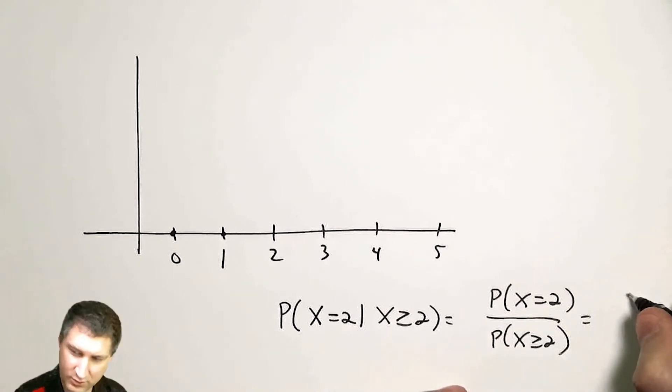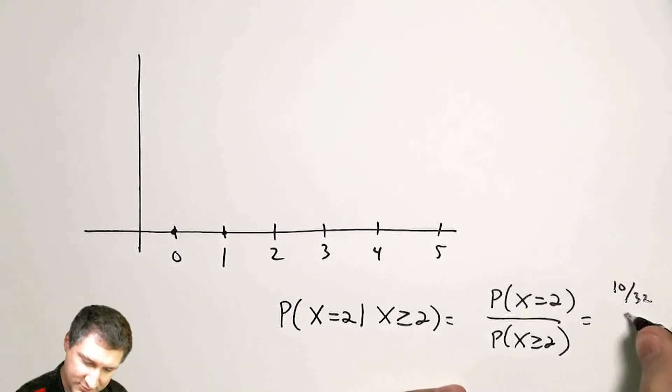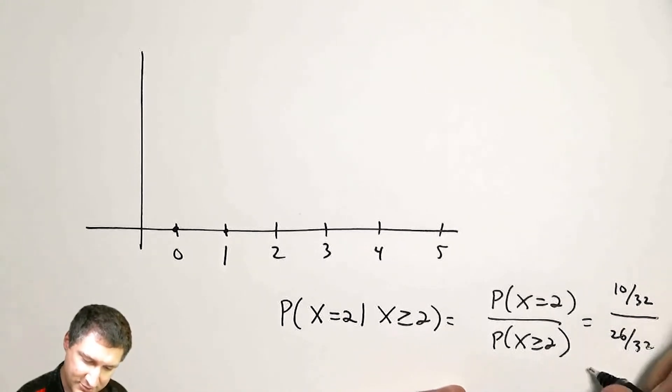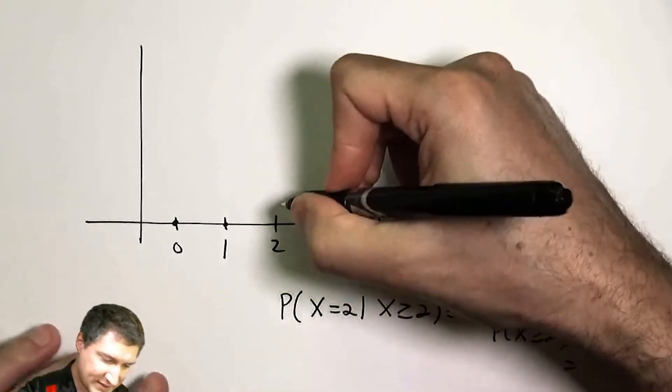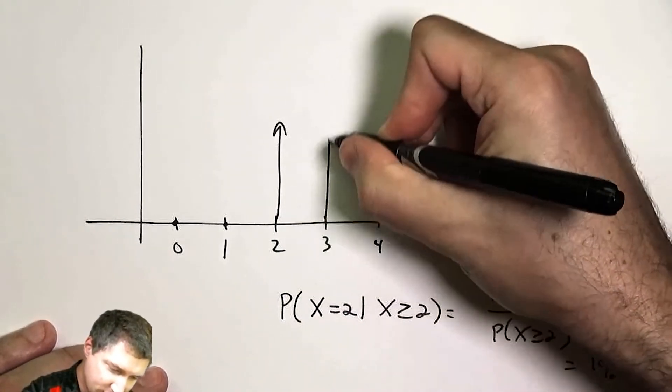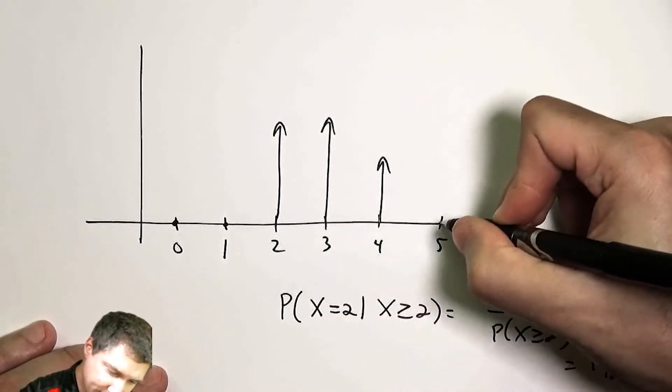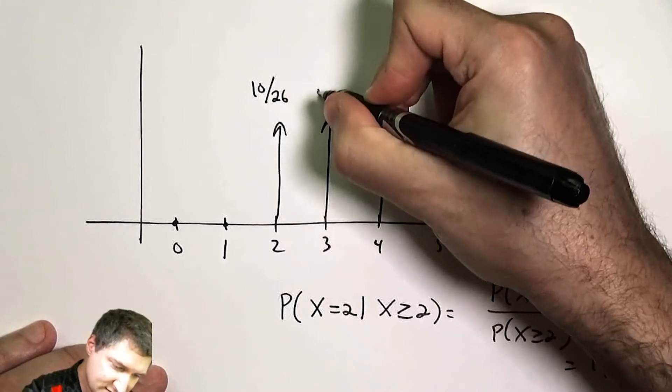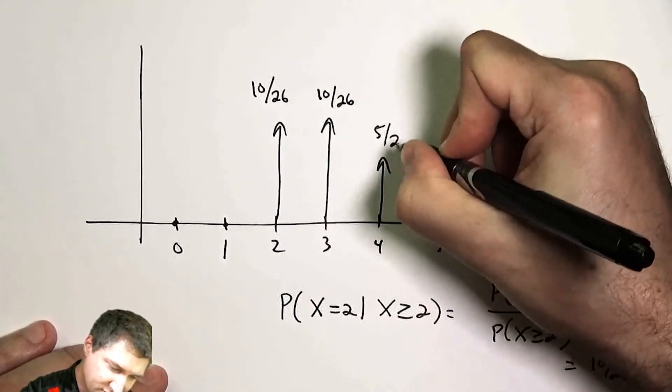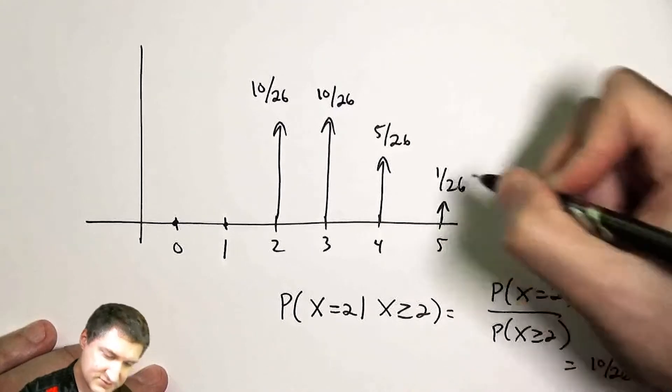This from before was 10 over 32. This from before was 26 over 32. And now my new number is 10 over 26. And so I can compute that my new PMF looks like this: 10 over 26, 10 over 26, 5 over 26, 1 over 26.